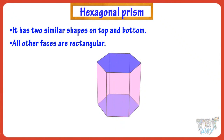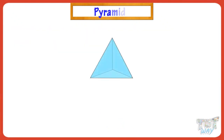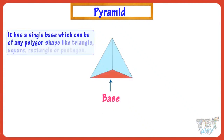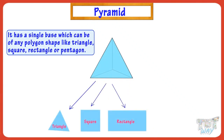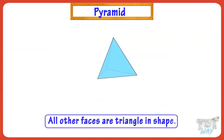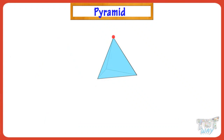Kids, now let's revise what a pyramid is. A pyramid is a 3D shape where it has a single base, which can be of any polygon shape — like triangle, square, rectangle, or pentagon. And all other faces are triangular in shape, that converge to a single point at the top, which is called its apex.